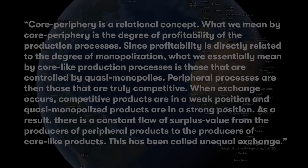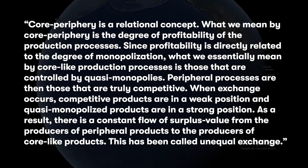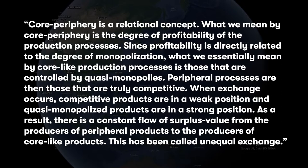It really emphasizes the core-periphery relationship. Wallerstein says: since profitability is directly related to the degree of monopolization, what we essentially mean by core-like production processes is those that are controlled by quasi-monopolies.